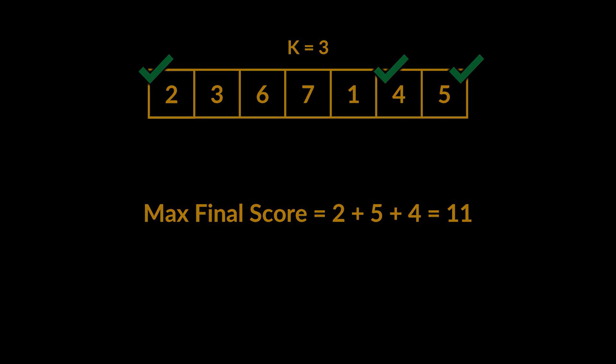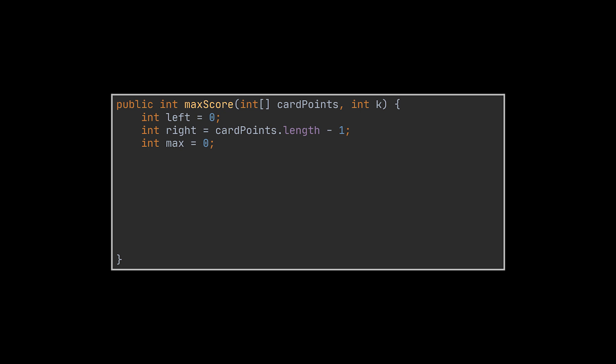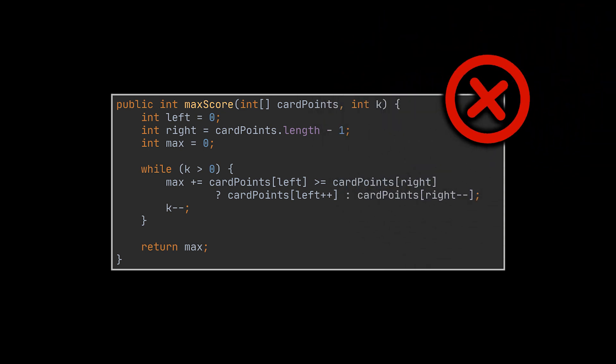Now the naive solution to approach this problem is to create two pointers, one starting at the leftmost integer and the second at the rightmost integer. Then after comparing the two stored values, we increase or decrease these pointers based on which value is the biggest and add the biggest value to the cumulative max score we want. We will keep doing this until we have our K values and the maximum is obtained. Right? Wrong.